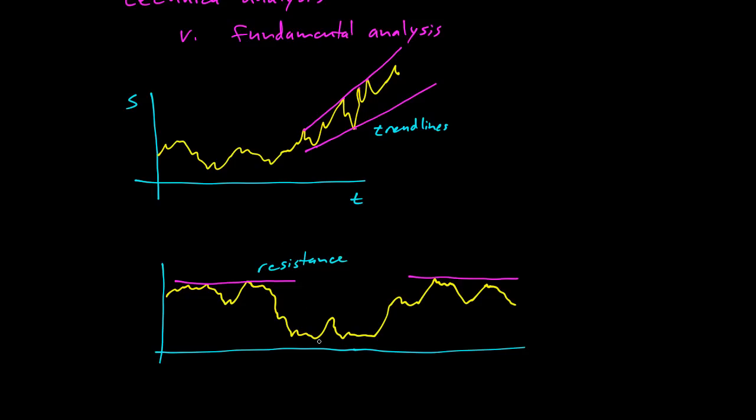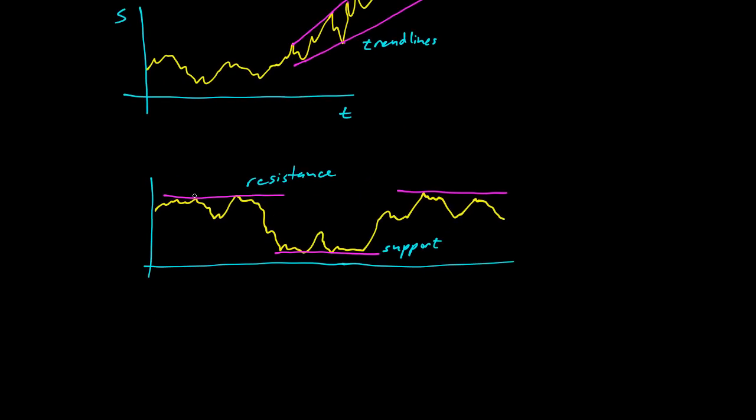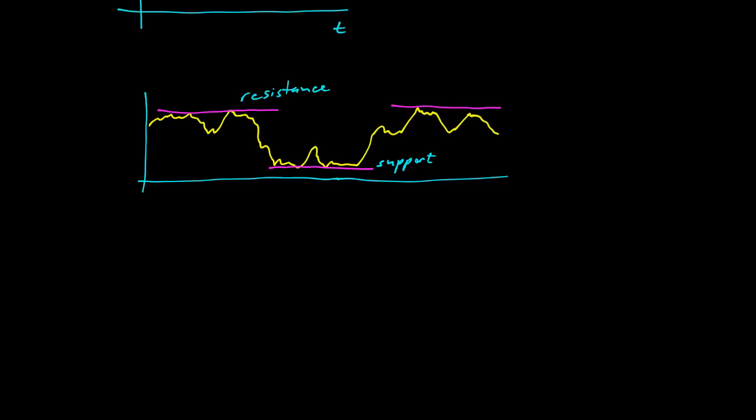And then similarly down here, you call this the support. It seems like there's a force supporting the stock and it doesn't want to break below that. So these resistance and support levels, while they hold, there'll be a constant price level that the stock can't go above or below. And once it does go above or below, it usually is said to go dramatically higher or dramatically lower to break through the support or to break through the resistance.